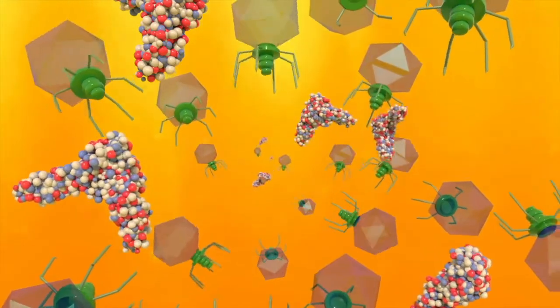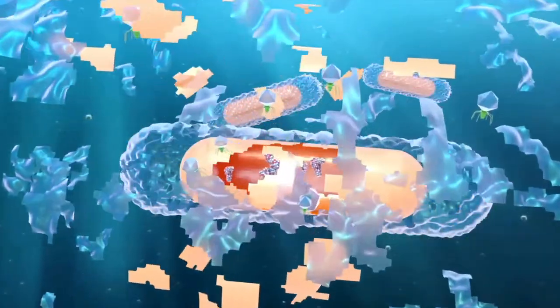its replication cycle now includes the production of the Collicin. This continues until the lysing event, which now releases both the phage replicates and the Collicins to the nearby cells.